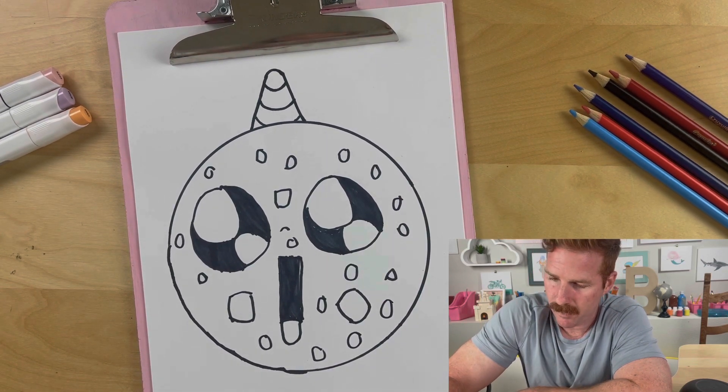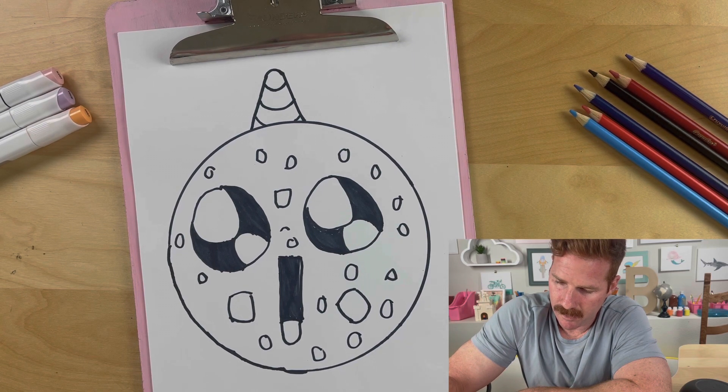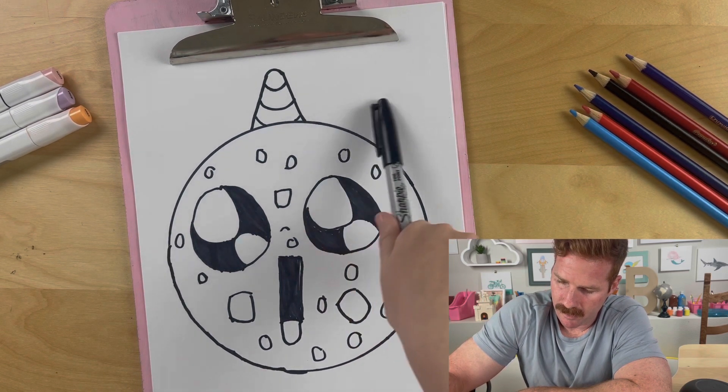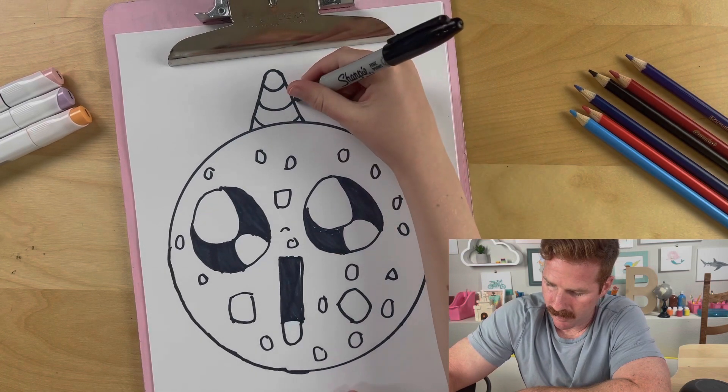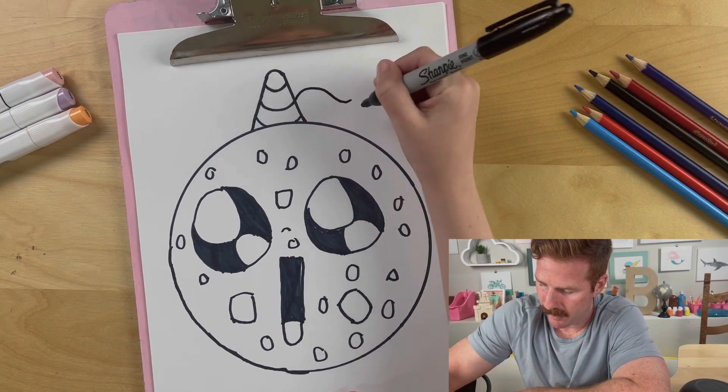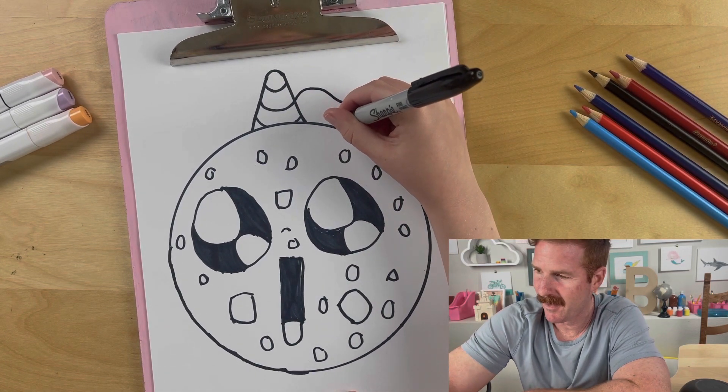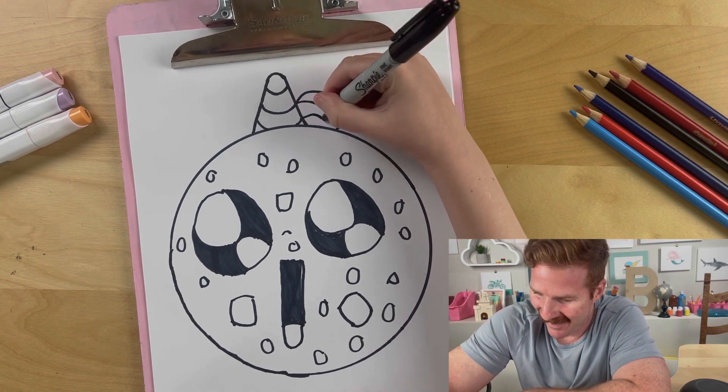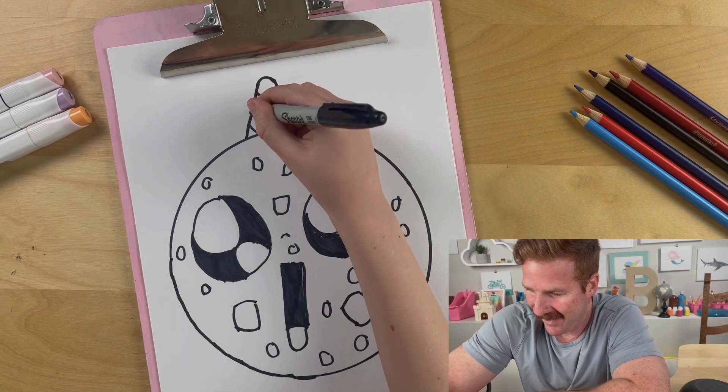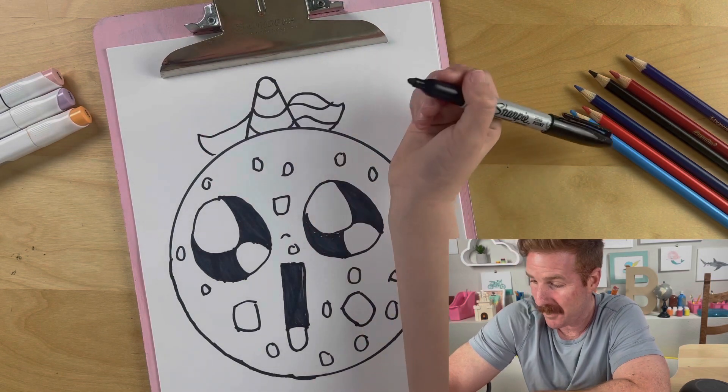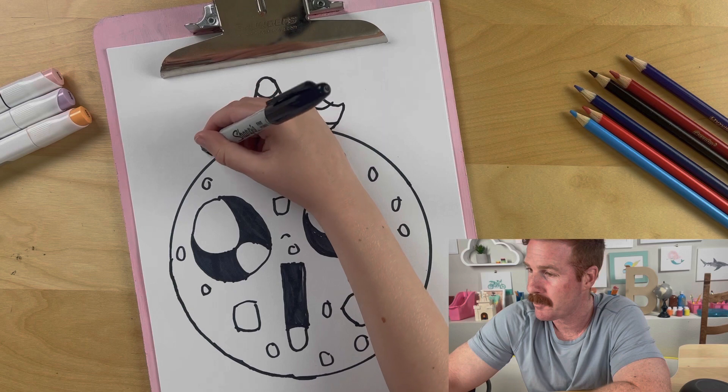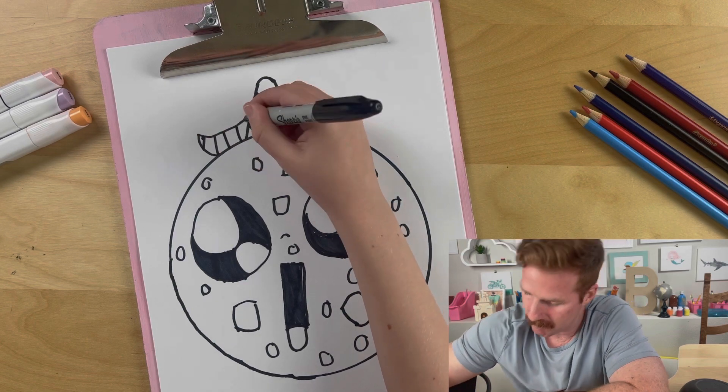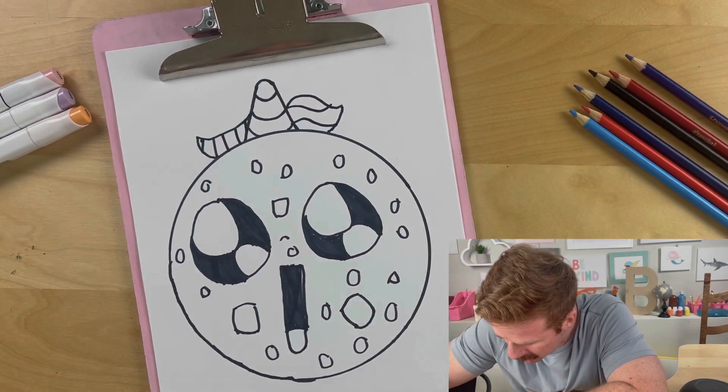Now we are done. But we can add a little hair. Swirl. And I think I'll do a little back right there. Now we are done.